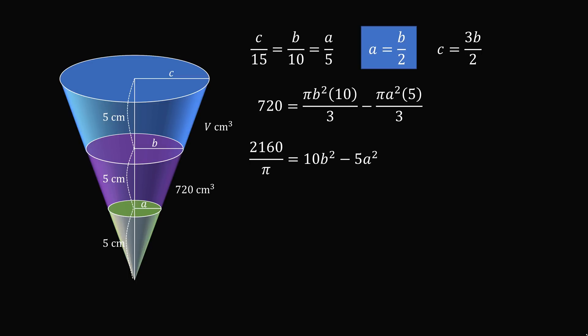Then, we know that A is equal to B over 2, so we'll substitute in. We'll simplify this equation, and then we'll solve for B squared. So we get that B squared is equal to 1728 divided by 7 pi.